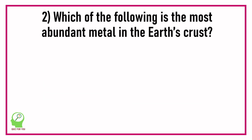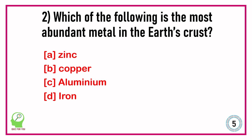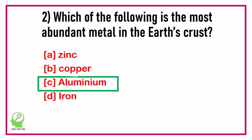Question number two: Which of the following is the most abundant metal in the earth's crust? Options are: Zinc, Copper, Aluminium, Iron. Answer: Aluminium.